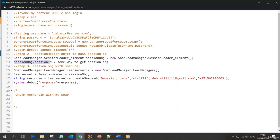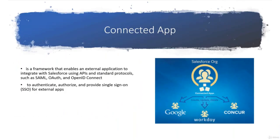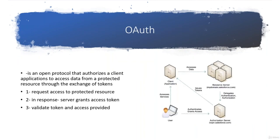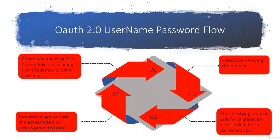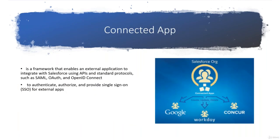So how are we going to do it? And whenever I want to use this OAuth, before understanding this, we have to understand two concepts. We have to understand about Connected App. I'll give just a quick intro about Connected App, and then I'll talk about what OAuth is and how OAuth is going to help me to get session information from the server.